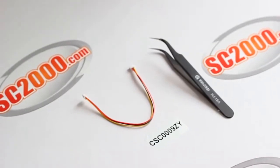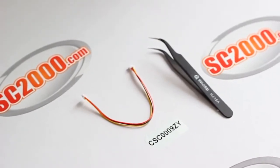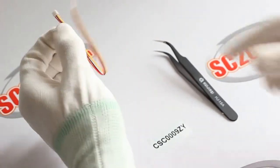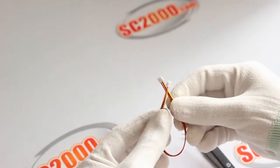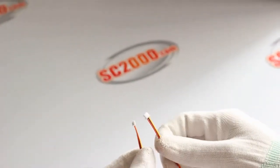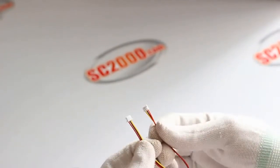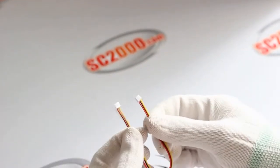Hello, this is a 3 core video power cable CSC0009ZY and it only weighs 1g, so we usually use it to replace the original video power cable for FPV camera to make the camera lighter.